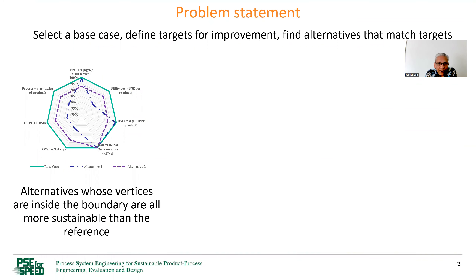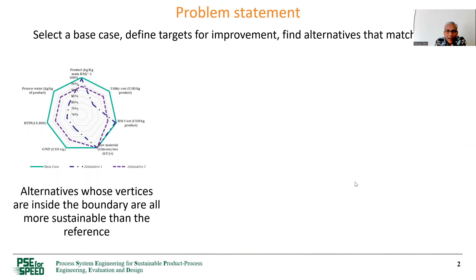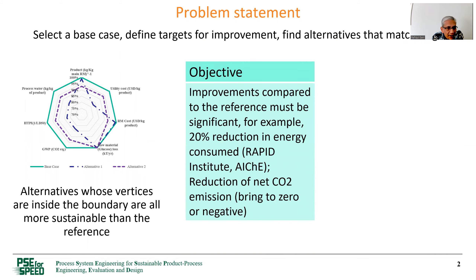The problem we are going to discuss in this presentation is how to select a base case, define targets for improvement for the base case, and find alternatives that match the targets. The base case is represented in this diagram on the left by the green boundary, and alternatives are supposed to be inside the boundary, so by definition they will be better. The objective is to find alternatives for which at least two of those vertices are significantly better, and all the others can be the same as the base case, but never crossing the green boundary.